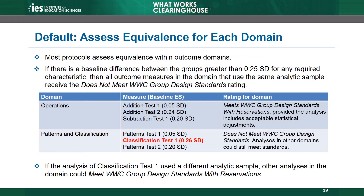Importantly, equivalence may not work this way if some analyses used different analytic samples, meaning they included different units. If one of the analyses uses a different analytic sample, the non-equivalence of a baseline measure for that sample does not affect equivalence of other outcomes within the domain. So if the analyses of Classification Test 1 used a different analytic sample than the other measures in the patterns and classification domain, then the other analyses in that domain could meet standards.